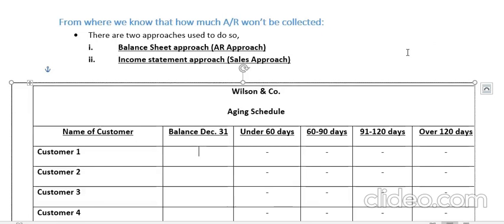Hello ladies and gentlemen, this is Osman Ali. We are here to discuss how to know how much of the accounts receivable we may not be able to recover — in other words, how to estimate bad debts. To answer this question we have two approaches: a balance sheet approach and an income statement approach, also called the accounts receivable approach and the sales approach. Let's discuss the balance sheet approach first.